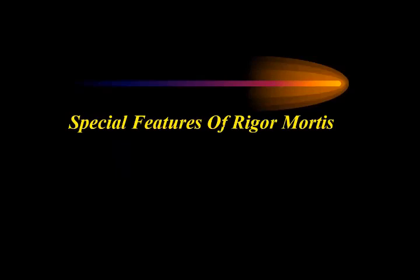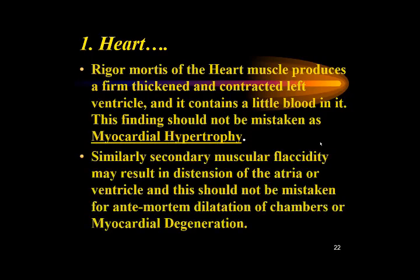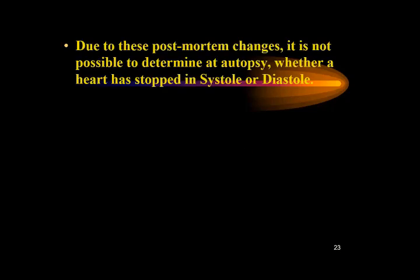Special features of rigor mortis: rigor mortis of the heart muscle produces a firm, thickened, and contracted left ventricle containing little blood. This finding should not be mistaken for myocardial hypertrophy. Similarly, secondary muscular flaccidity may result in distension of the atria or ventricles, which should not be mistaken for antemortem dilatation of the chambers or myocardial degeneration. Due to these post-mortem changes, it is not possible to determine at autopsy whether a heart stopped in systole or diastole.